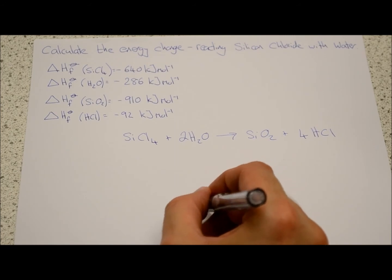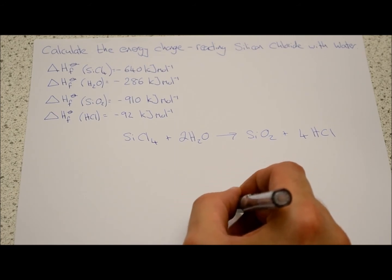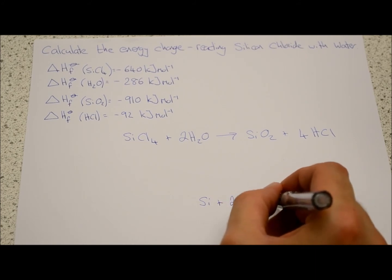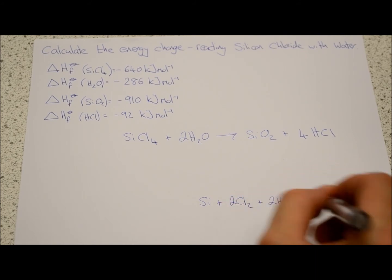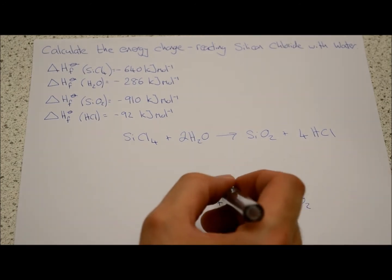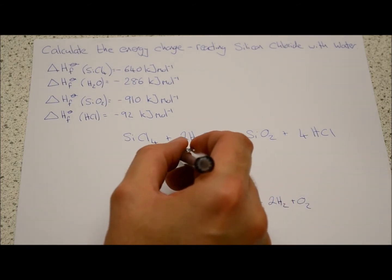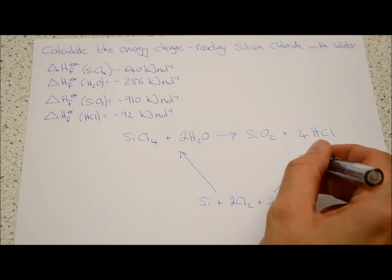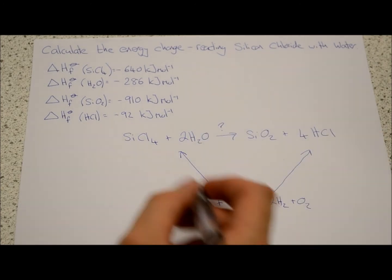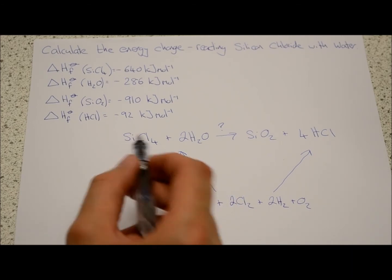So we're going to have a silicon, we're going to have two moles of chlorine, we're going to have two moles of hydrogen, and we also have a mole of oxygen. So as before, we're going to calculate this path and this path in order to calculate that path.